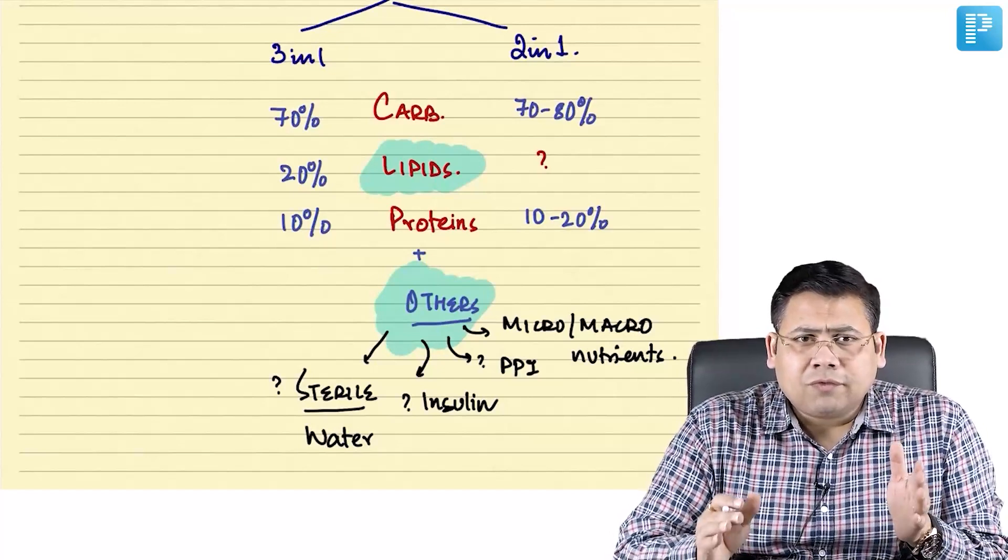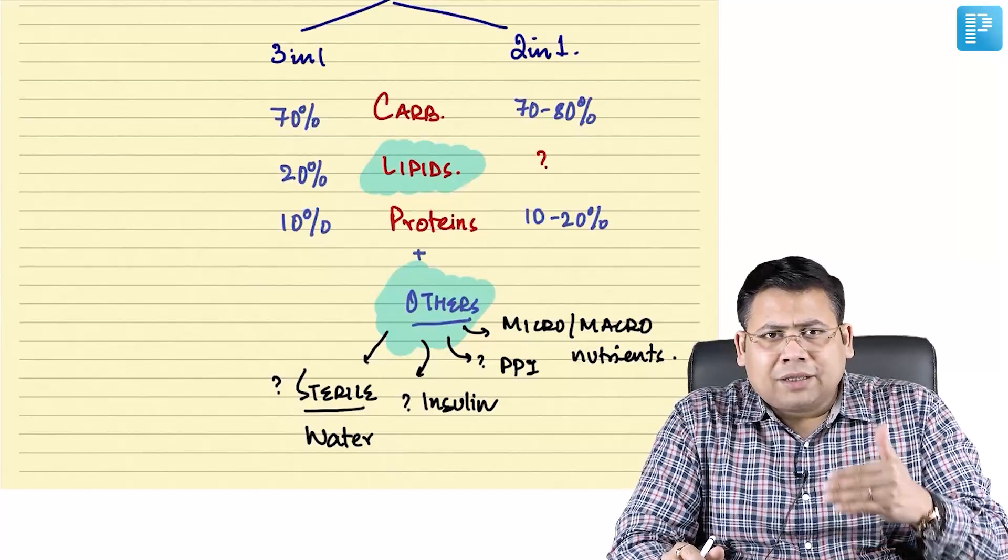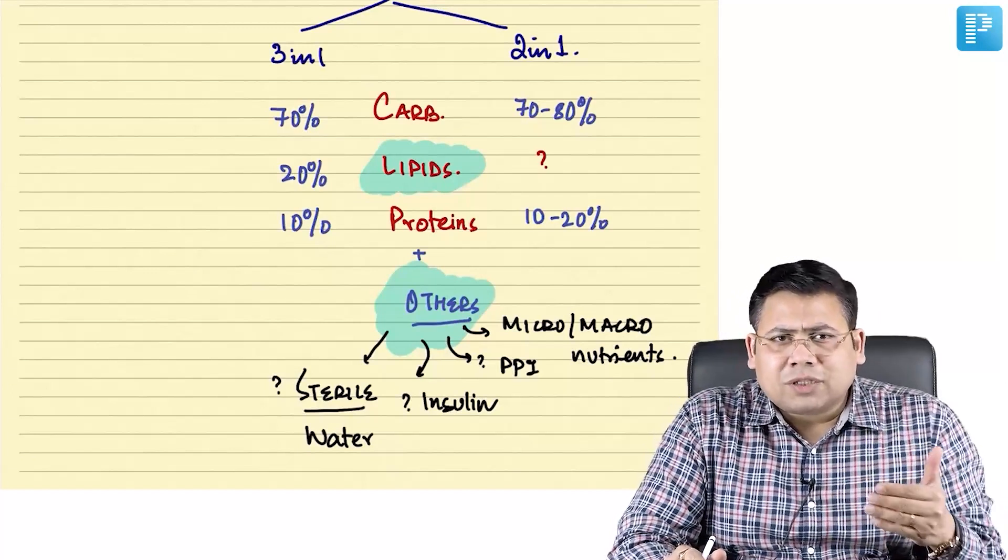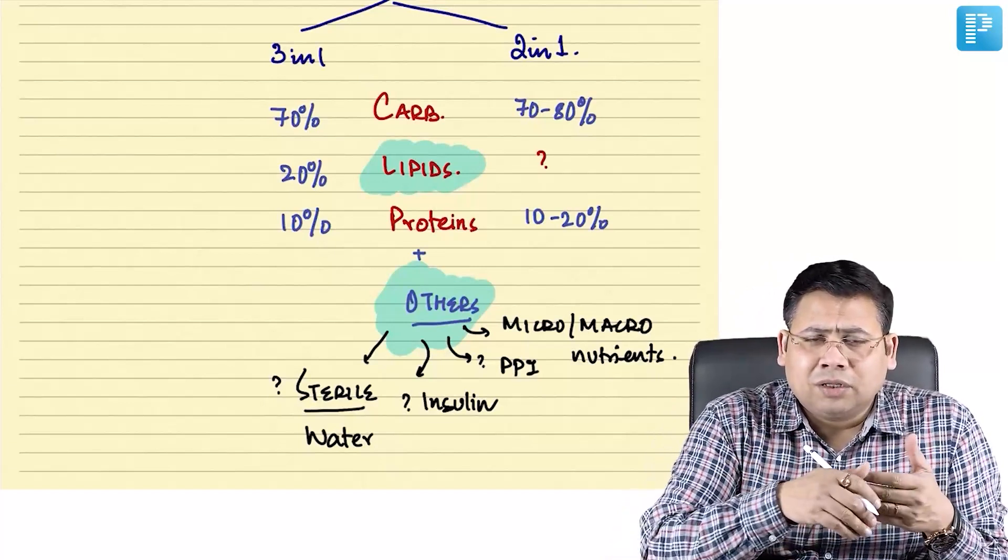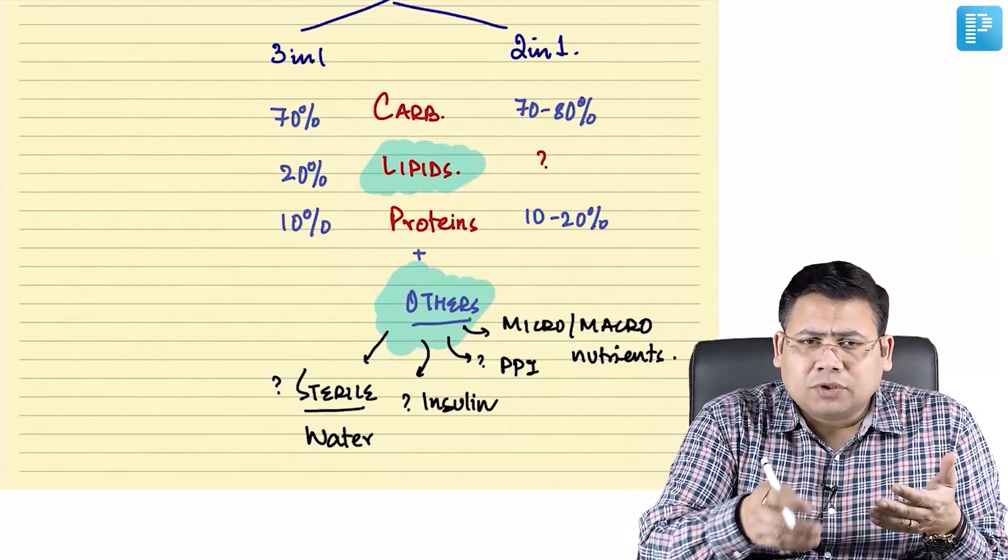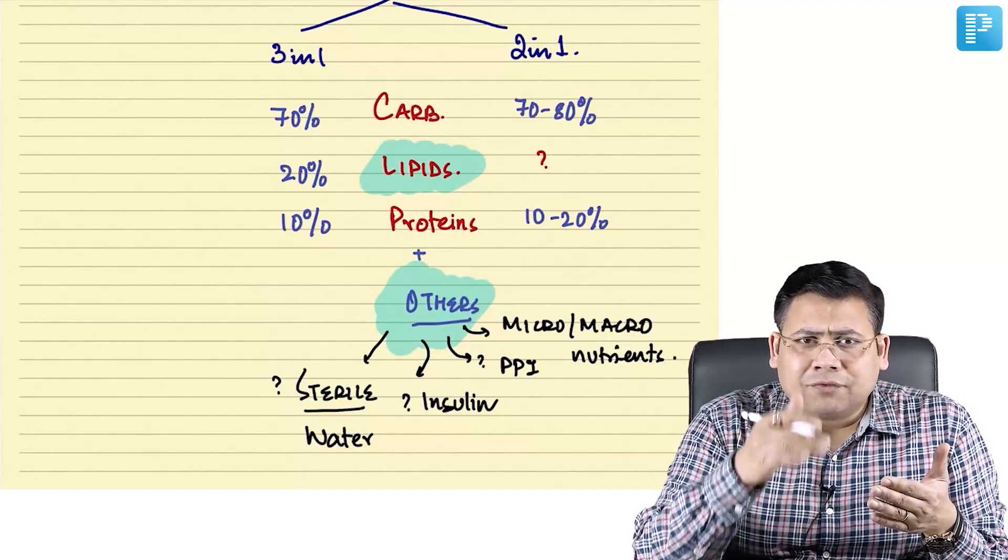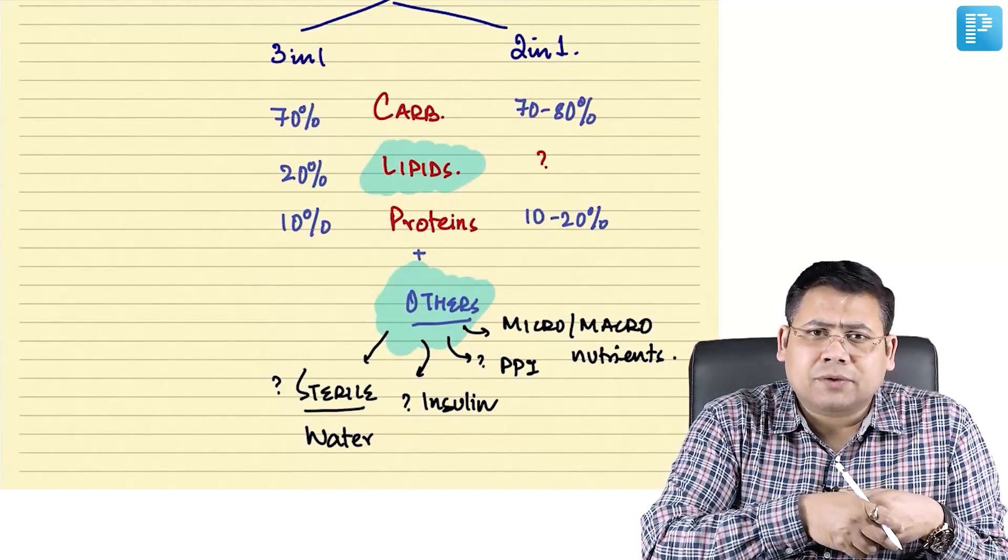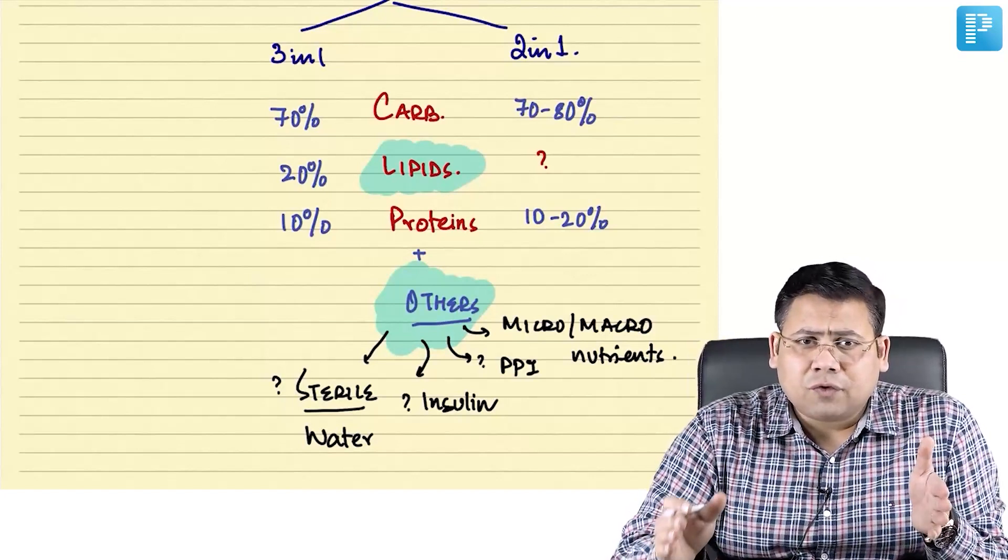But one very important thing: lipids when they break down, they release either arachidonic acid or icosapentaenoic acid and this arachidonic acid will further release prostaglandins, thromboxane A2, some leukotrienes, and that reduces inflammation and prolongs hospital stay.